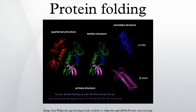Incorrect protein folding is associated with prion-related illnesses such as Creutzfeldt-Jakob disease, bovine spongiform encephalopathy, amyloid-related illnesses such as Alzheimer's disease and familial amyloid cardiomyopathy or polyneuropathy, as well as intracytoplasmic aggregation diseases such as Huntington's and Parkinson's disease. These age-onset degenerative diseases are associated with the aggregation of misfolded proteins into insoluble extracellular aggregates and/or intracellular inclusions including cross-beta-sheet amyloid fibrils.